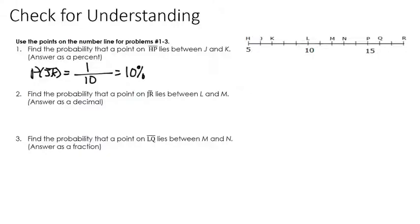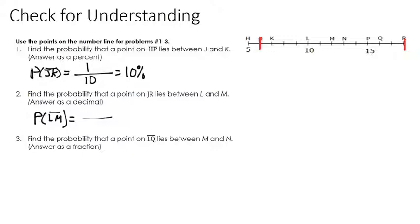The second problem: find the probability that a point on JR lies between L and M. JR is our total length, going from 6 to 18, so it has a length of 12. The length of our success is LM, which has a length of 2. So LM over JR is 2 over 12, which is roughly 0.17, or about 17%.